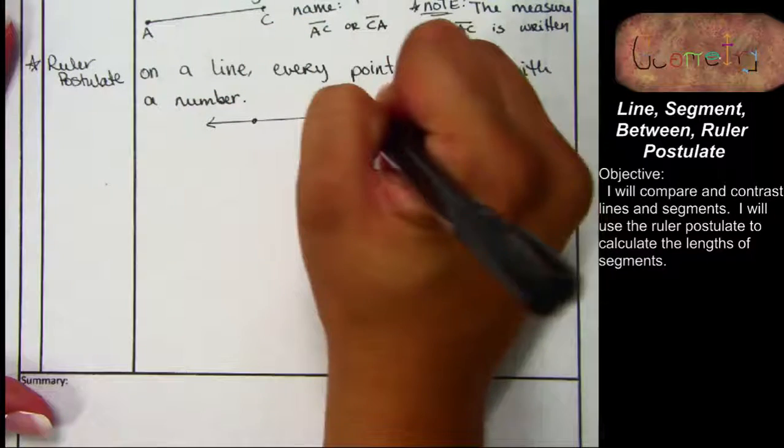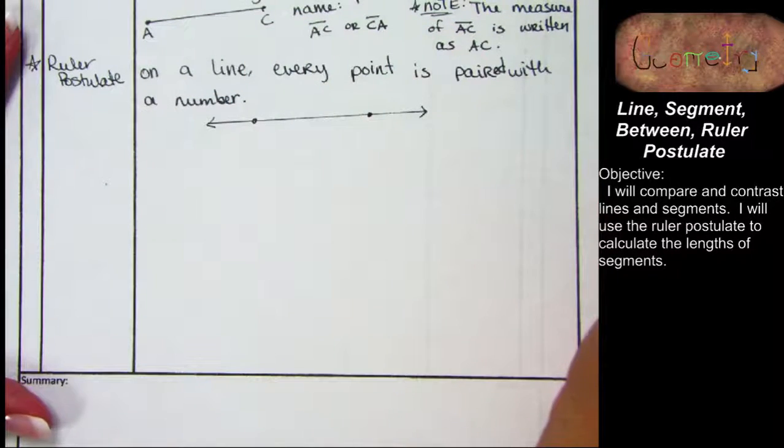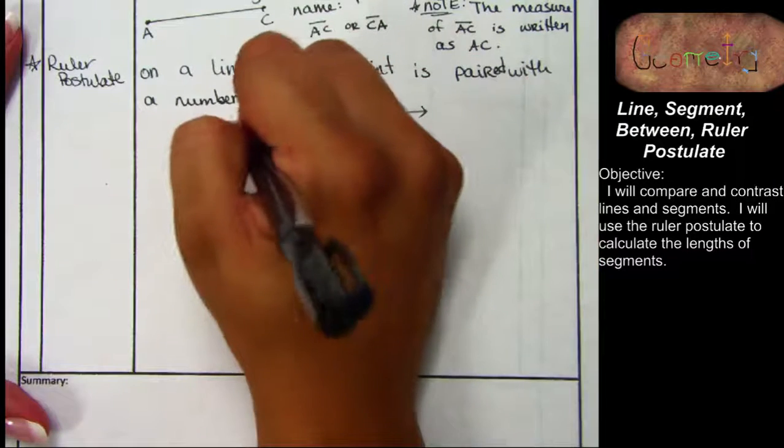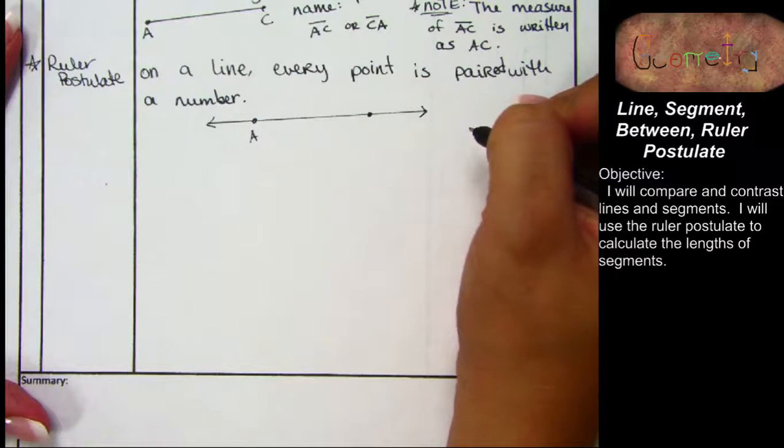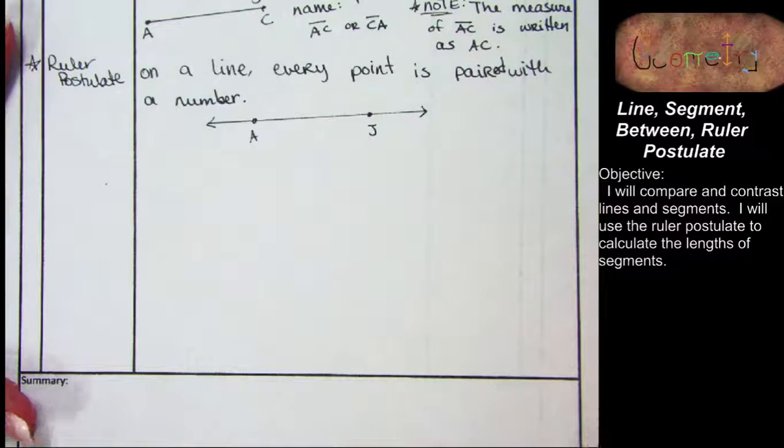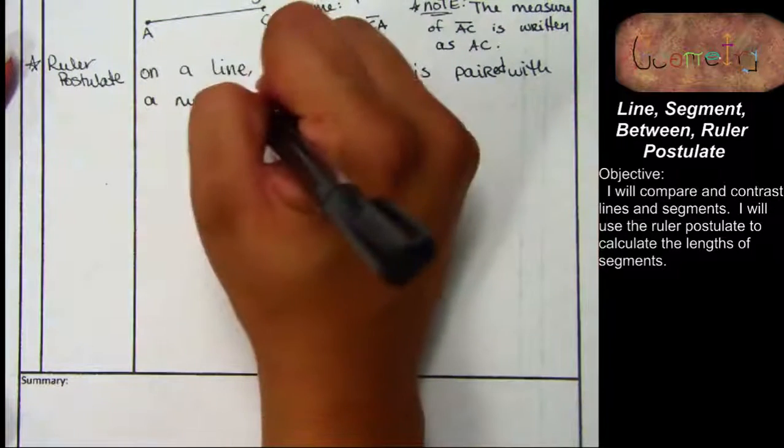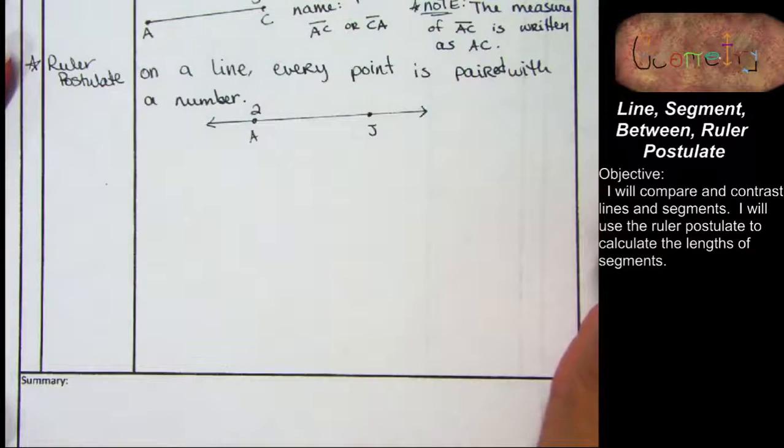Here's a line, and I have two points on the line. Can I have names for these points, please? A. A. Another person? J. J. Now, because these points can be paired with numbers, can I have the number for A? Two. Two? Can I have a number for J? Five. I heard five. Sorry. That's okay. These numbers that we pair with points on the line are called coordinates. So the coordinate for A is? Two. And the coordinate for J is? Five. Beautiful. Those are the coordinates.